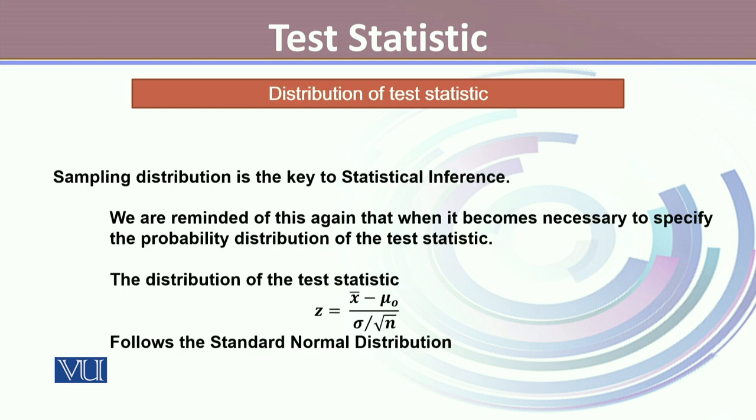The sampling distribution is the key to statistical inference. We are reminded of this again that when it becomes necessary to specify the probability distribution of the test statistic, the distribution of the test statistic here when we talked about z statistic is the standard normal distribution.